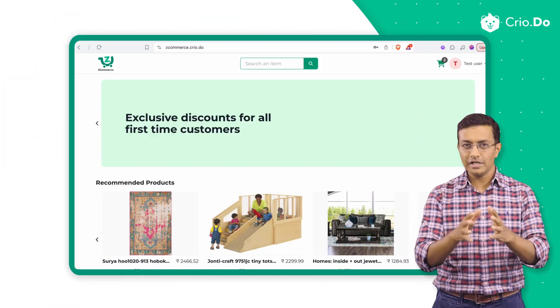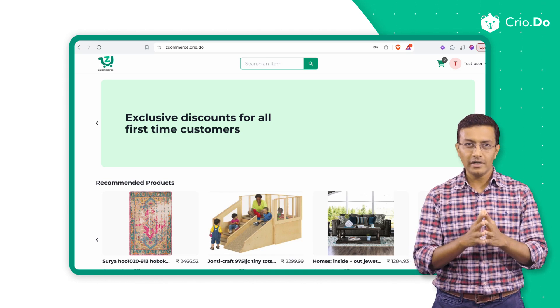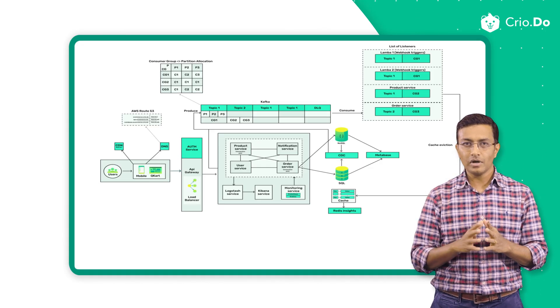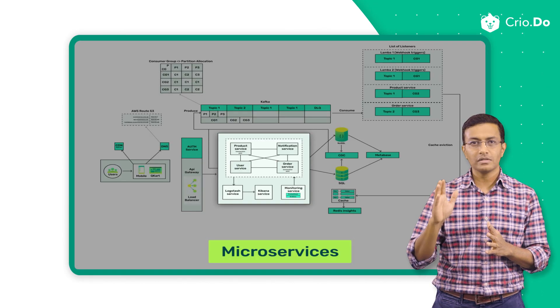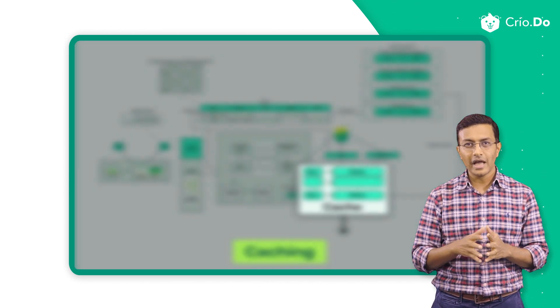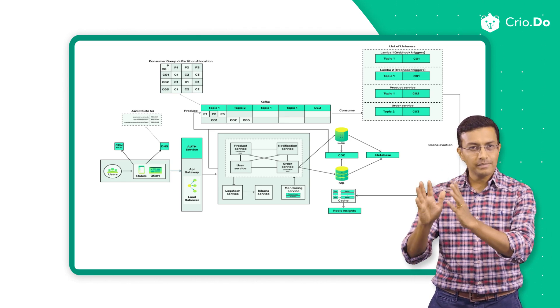If you are already a QA automation engineer looking at mastering the breadth of distributed back-end testing, we cover that in our advanced offering. As part of our advanced offering, you will be working with a live distributed application deployed on the cloud called ZCommerce. ZCommerce architecture has a front-end where web automation testing using Selenium fits in. The back-end is complex with microservices, message queue like Kafka, SQL databases, Redis cache, and some external integrations. You will be focusing on testing this back-end.